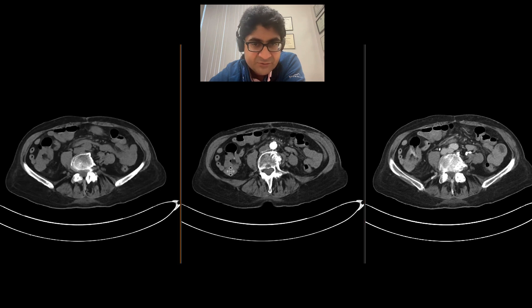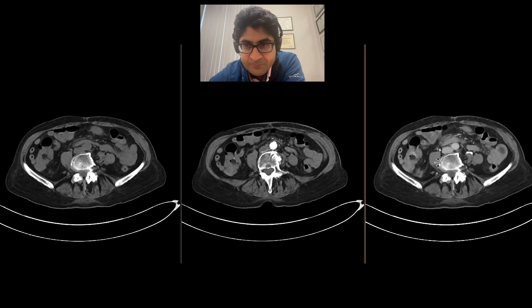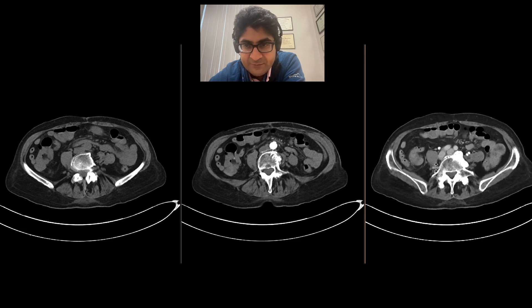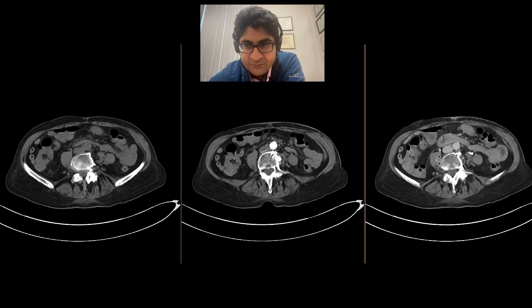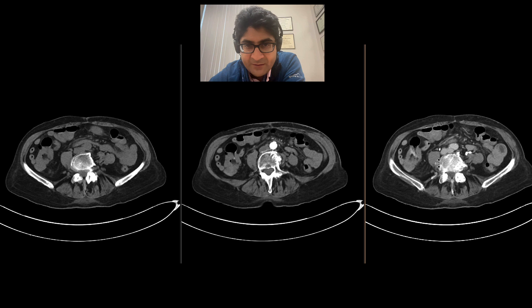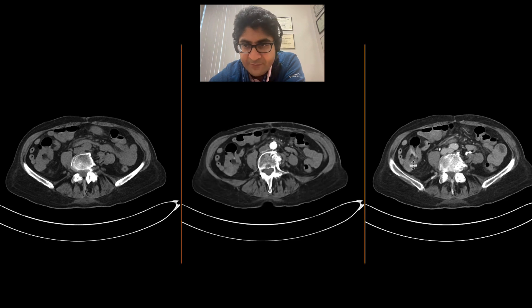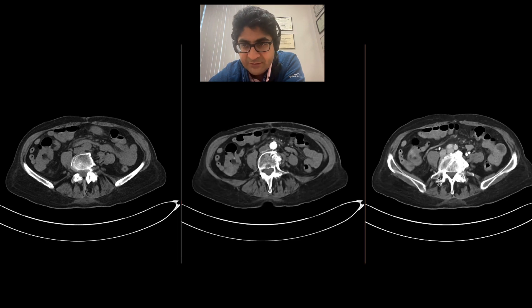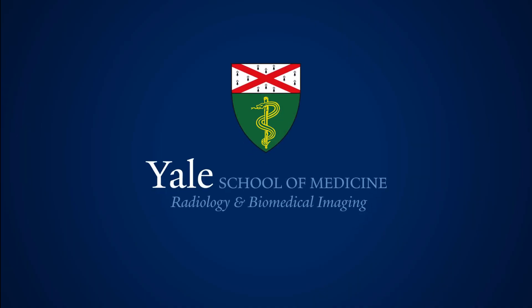These findings are compatible with an active bleed right in the cecum, in the vicinity of the ileocecal valve — a finding that was present on the arterial phase, somewhat subtle, but it was there, and much more evident on the delayed phase images. Thank you.